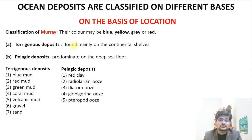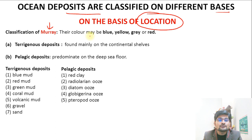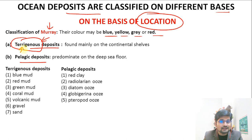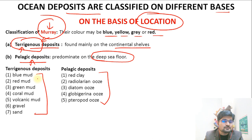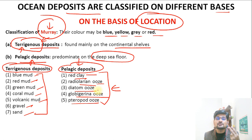Murray and Jenkins' classification is the most famous scientific classification of ocean deposits. Murray classified them on the basis of location into two types: terrigenous deposits — found mainly on continental shelves — and pelagic deposits in the deep ocean floor. Examples of terrigenous deposits include blue mud, red mud, green mud, coral mud, volcanic mud, gravel, and sand. Pelagic deposits include red clay, radiolaria ooze, diatom ooze, globigerina ooze, and pteropod ooze.